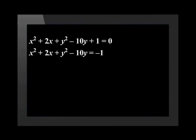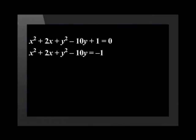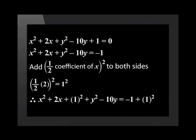Now we need to complete the square for x and y separately. Let's start with x. Add half the coefficient of x, in brackets, squared, to both sides of the expression. Half of 2, in brackets, squared, is equal to 1 squared. We need to add this to both sides of the equation. Therefore we have x squared plus 2x plus 1 squared plus y squared minus 10y equals negative 1 plus 1 squared.